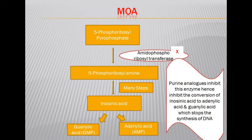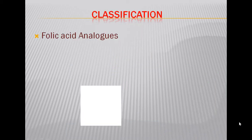The enzyme amidophosphoribosyl transferase is required for the synthesis of 5-phosphoribosylamine from 5-phosphoribosyl pyrophosphate. After many steps, this produces inosinic acid, which is further converted into guanylic acid and adenylic acid. The purine analogues inhibit amidophosphoribosyl transferase and thus prevent the conversion of inosinic acid to adenylic acid and guanylic acid, stopping DNA synthesis.